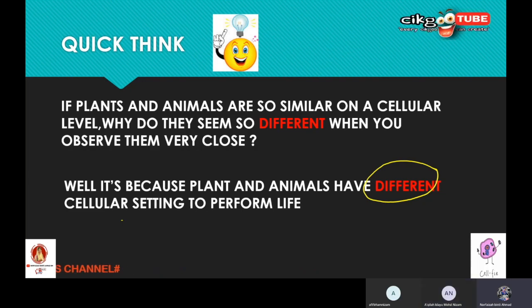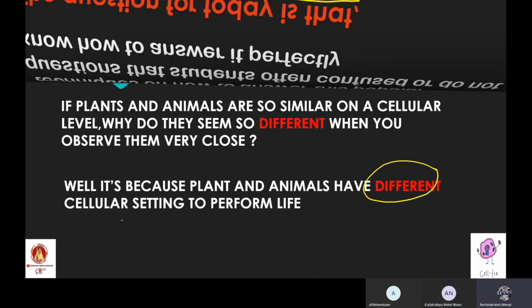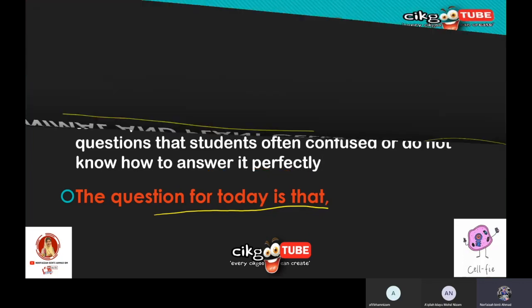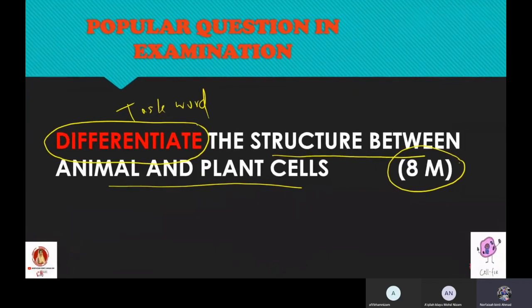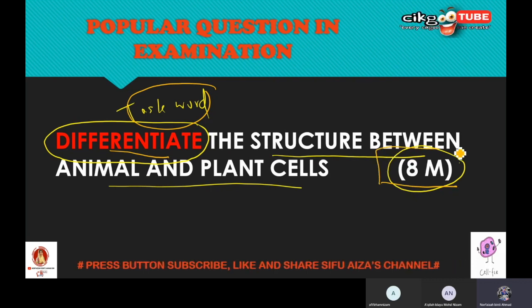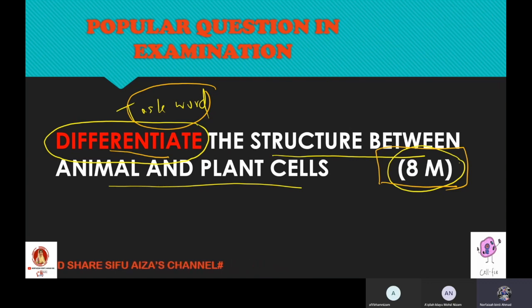Very good. Because they have different cellular setting to perform life. Now teacher would like to share answering questions and techniques. For our question today, we are looking at the previous lesson. Differentiate the structure between animal and plant cell. So the task word is differentiate.